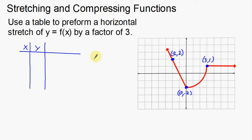I'm going to put those points in my table. So I have (-2, 2), I have (0, -2), and I have (3, 1).